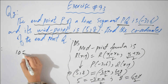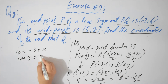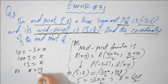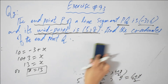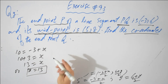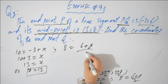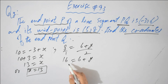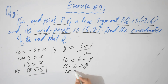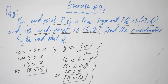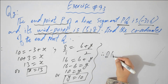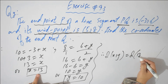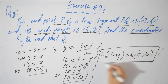From the first equation: 10 equals minus 3 plus x, so 10 plus 3 equals x, giving x equals 13. From the second equation: 8 equals (6 plus y) by 2, so by cross multiplication, 16 equals 6 plus y, and 16 minus 6 equals y, giving y equals 10. Therefore Q of x comma y equals Q of 13 comma 10. These are the coordinates of end point Q.